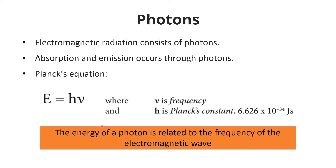Whenever an electron absorbs a photon, the energy of the atom increases by the same amount as the energy of that photon. And when the electron comes back to the ground state, the energy of the atom decreases by the same amount as the energy of the photon which is released.